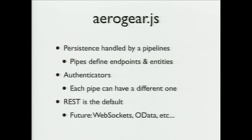AeroGear.js is one of the more complete libraries at this point. It has a concept called pipelines — this is how you hook up to different endpoints and different servers. You create a pipeline to a set of RESTful endpoints and define pipes to those endpoints. Once defined in your JavaScript code, it's very simple to then save, update, delete, modify, and query based on those pipelines. In a similar way, we have authenticators.